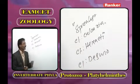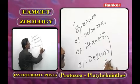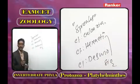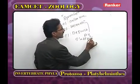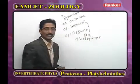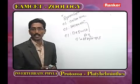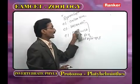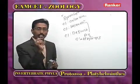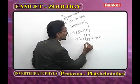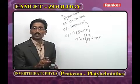In class Hexactinellida, spicules are made by SiO₂ and the common name is glass sponges. Examples include Euplectella and Hyalonema. Each spicule has six rays. All are solitary and marine sponges.